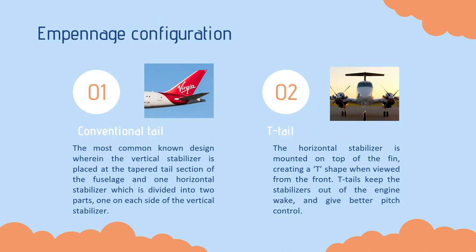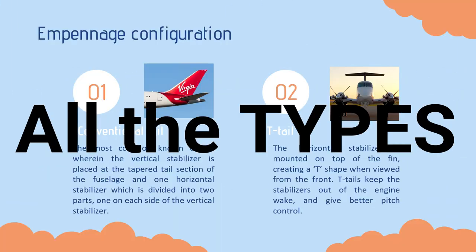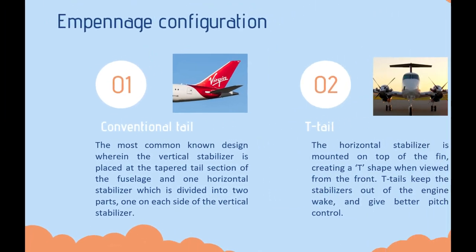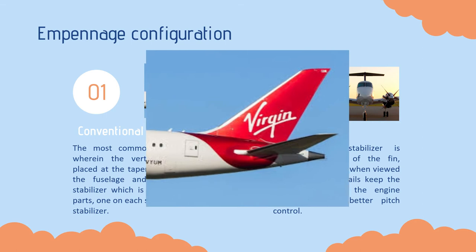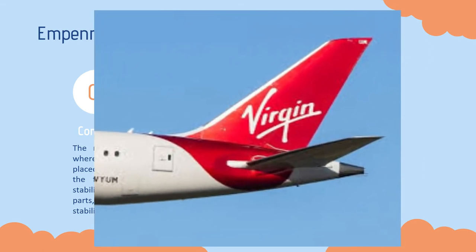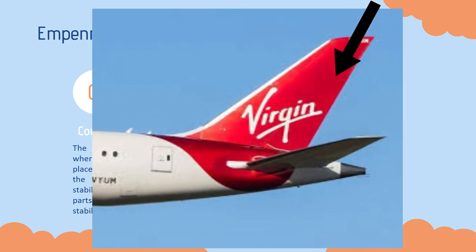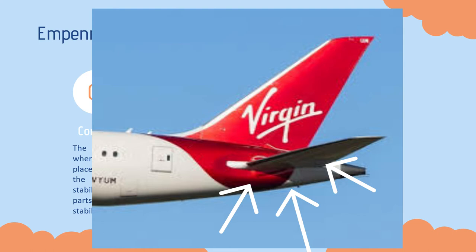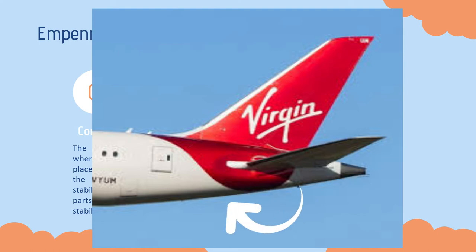Hello guys, this is Kyle Alid speaking. We are going to talk about the empennage configuration and all the types. First, we will start with conventional tail. The conventional tail is the most common known design, wherein the vertical stabilizer is placed at the tapered tail section of the fuselage, and one horizontal stabilizer is divided into two parts, one on each side of the vertical stabilizer.